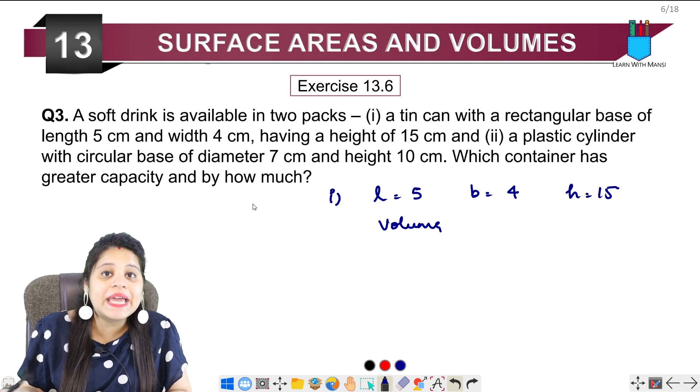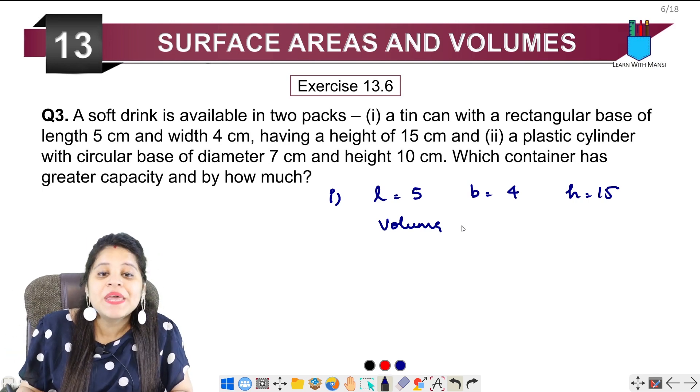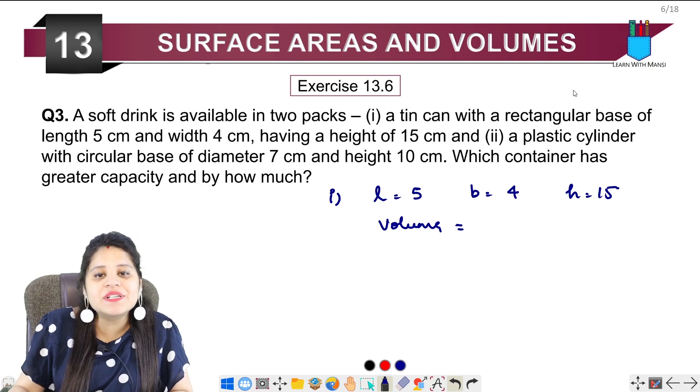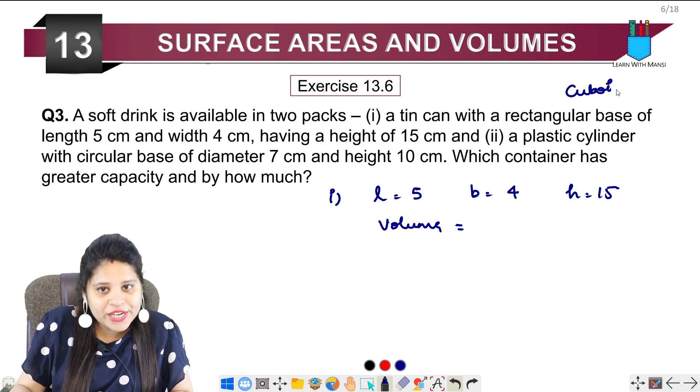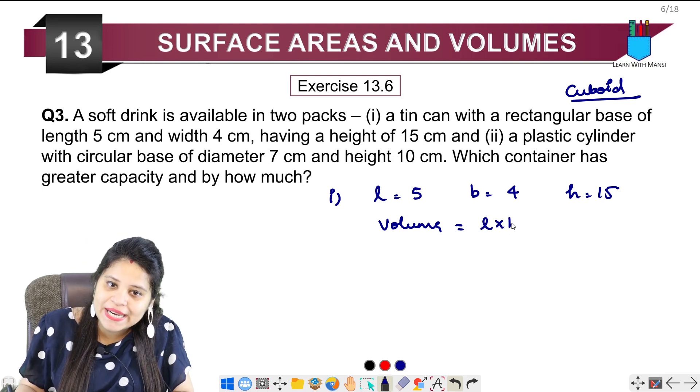Which container's capacity is more? How do we find the capacity? From volume. So first we will find the volume. We have a cuboid shape, so cuboid volume is length into breadth into height.